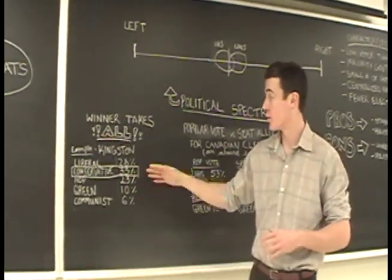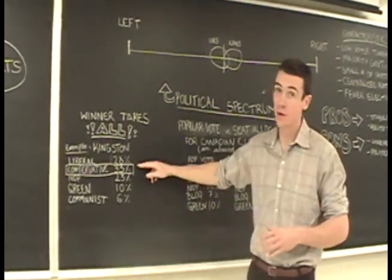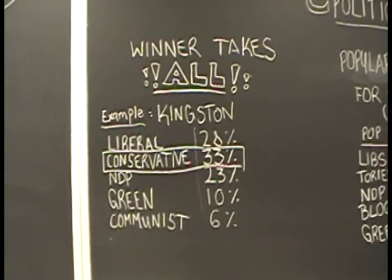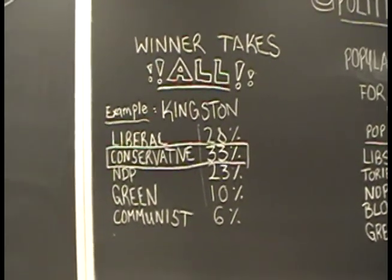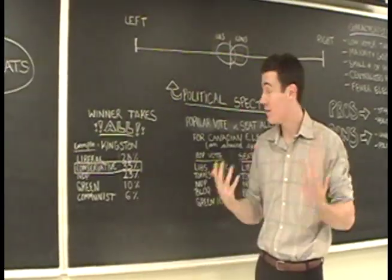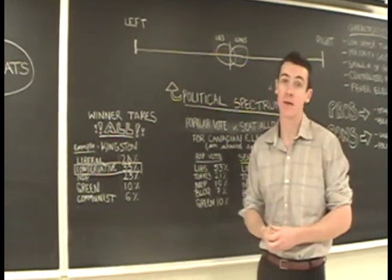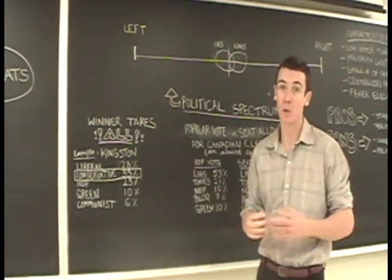Even though the conservative only has 33% of the vote, not enough to make a majority, simply a plurality, they're the ones who get to represent their constituency in the House and they win everything.